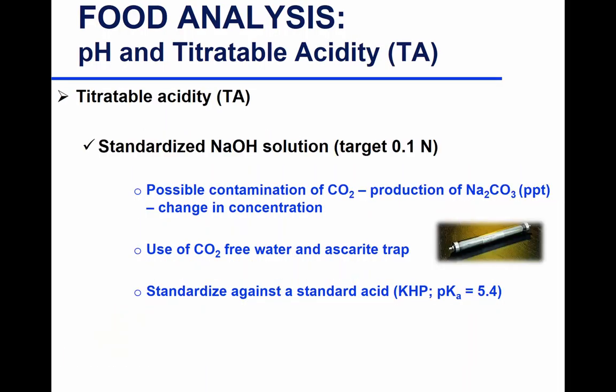To get accurate percent titratable acidity, you titrate with a base, but that base needs to be standardized. By standardization, we mean you are certain of the accurate normality of that base. You standardize your base solution against a standard acid.